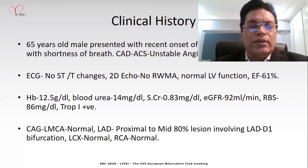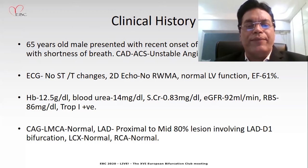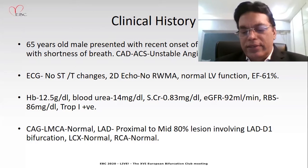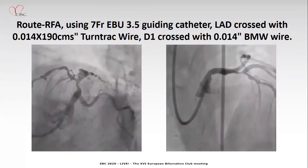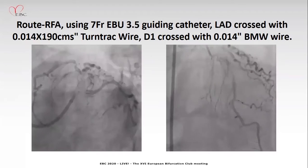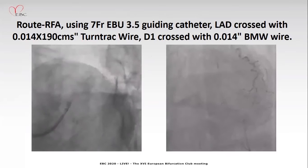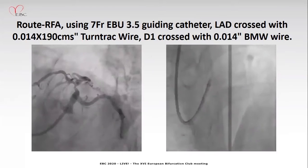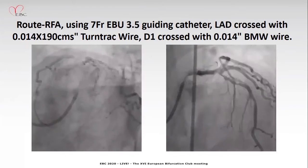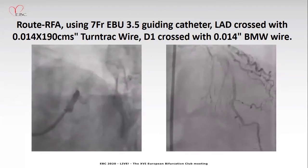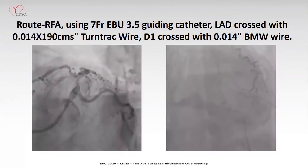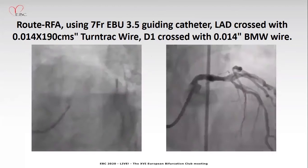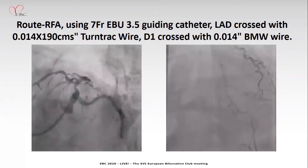Angiogram showed a long segment lesion involving proximal to mid LAD. There is a significant bifurcation lesion involving the D1-LAD junction. Right femoral route, 7 French EBU 3.5 guiding catheter was used.